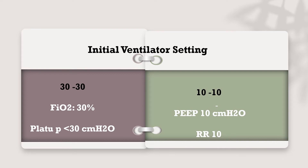There is an approach called the 30-30-10-10 approach: FiO2 at 30%, plateau pressure less than 30 cm water, PEEP at 10, and respiratory rate at 10. This is the setting recommended for patients who are on ECMO.